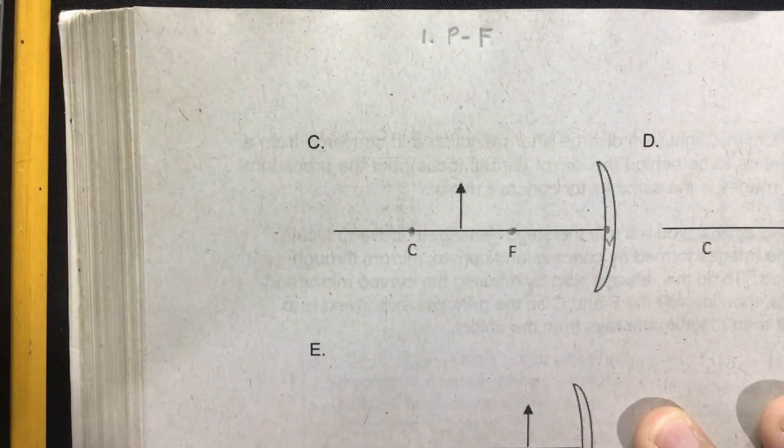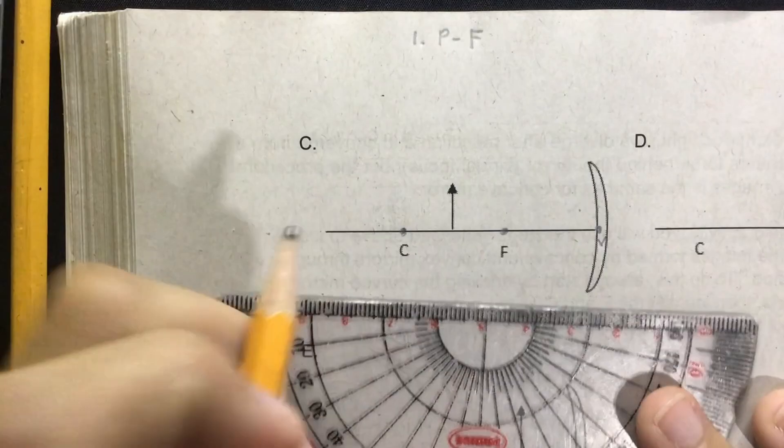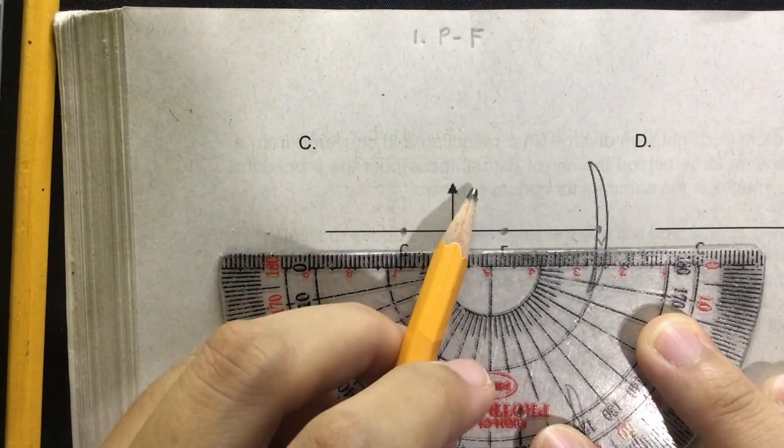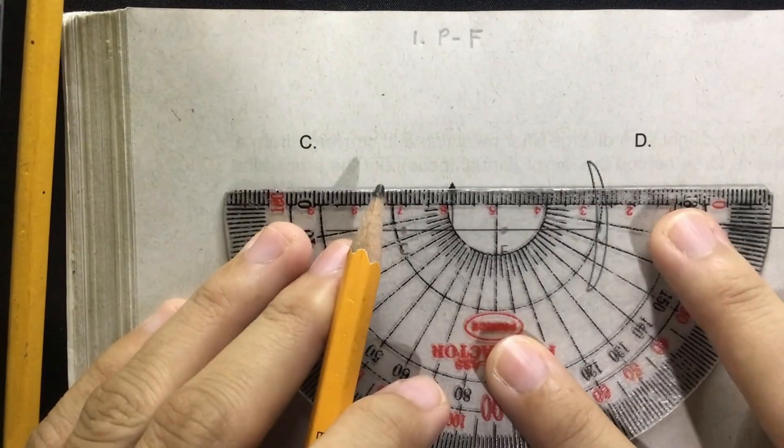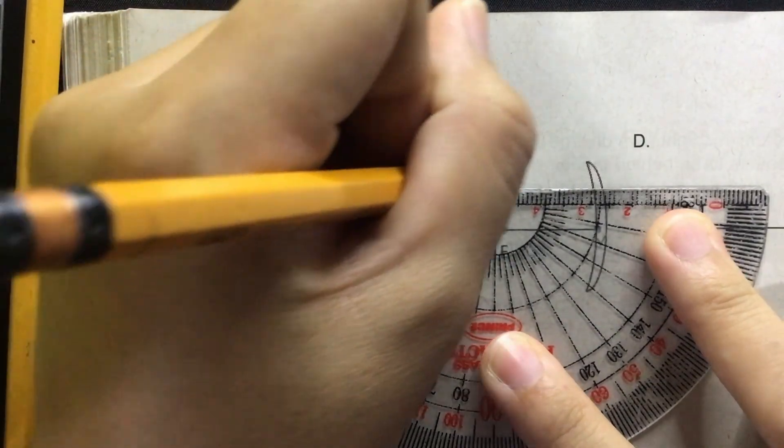Okay, so what is P? It is a ray of light parallel to the principal axis. So we're going to draw a ray of light that is parallel to the principal axis.